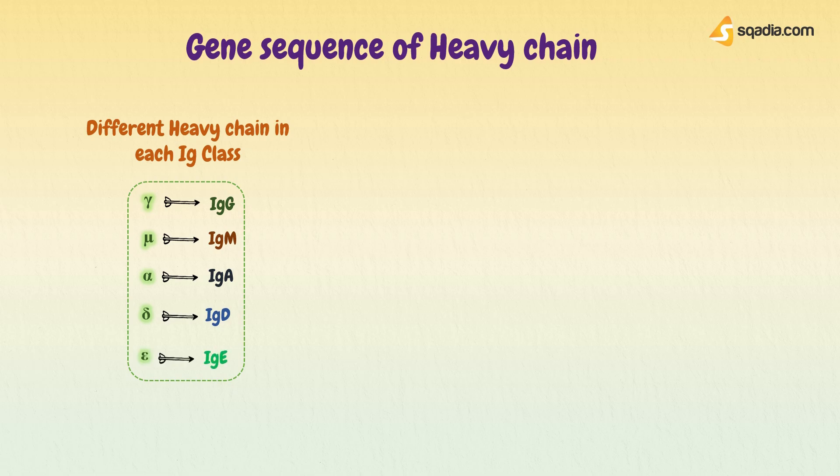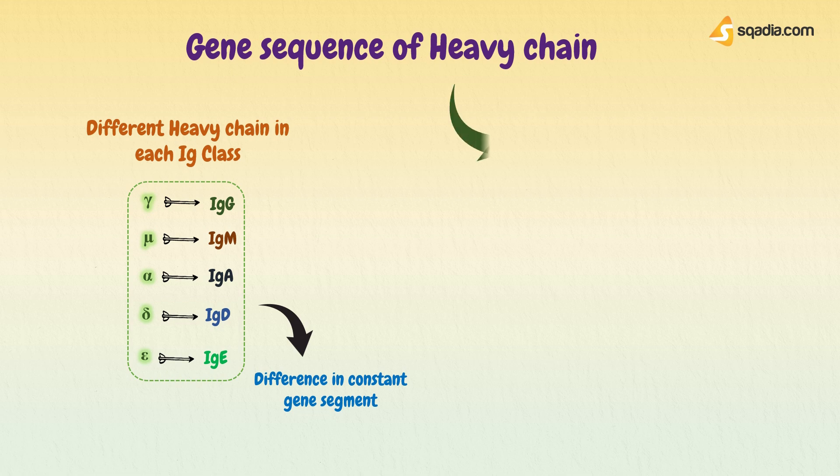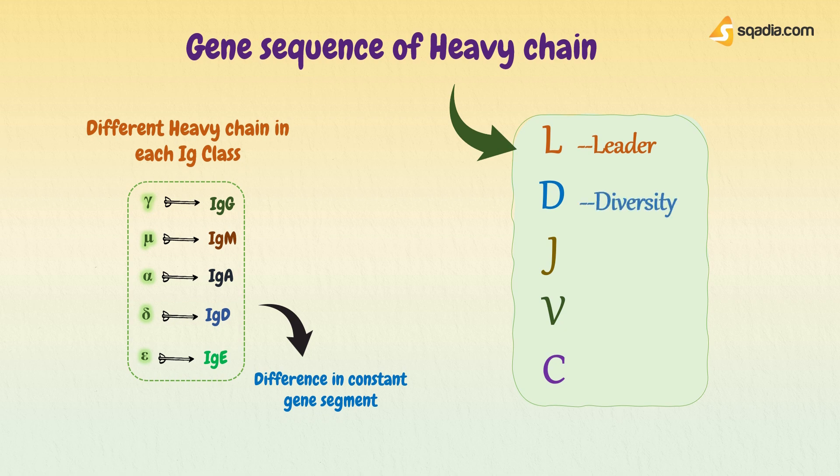But all these types of heavy chains have similar genetic sequences. The only difference is in their constant region gene segment. The heavy chains of immunoglobulin are comprised of three sets of gene segments: L, D, and J, other than V and C gene segments. Here L is for leader, D for diversity, J for joining, V for variable, and C for constant gene segments.